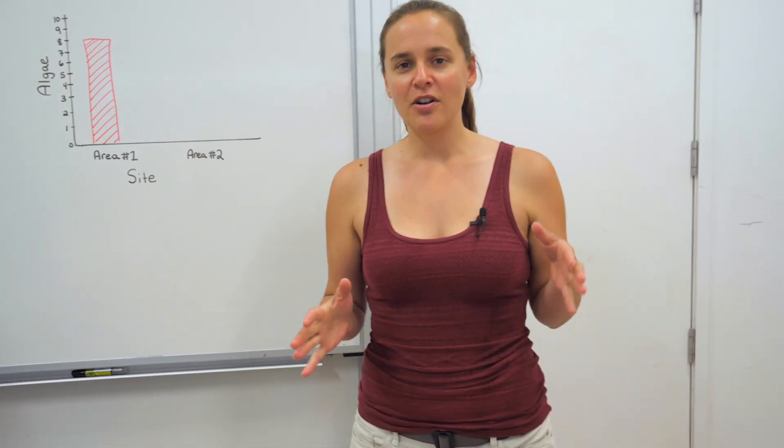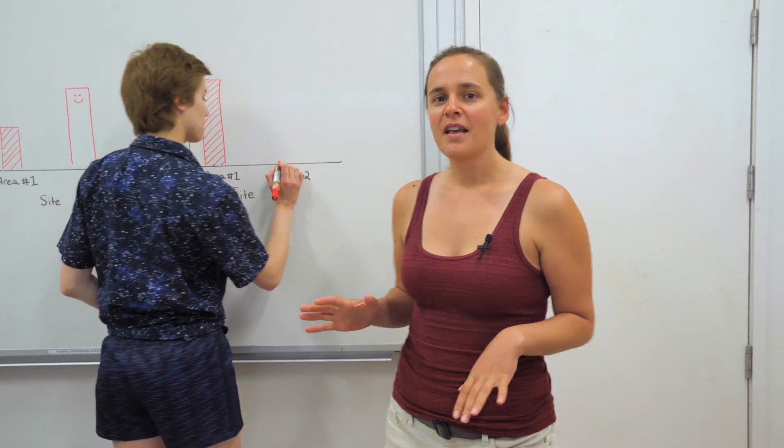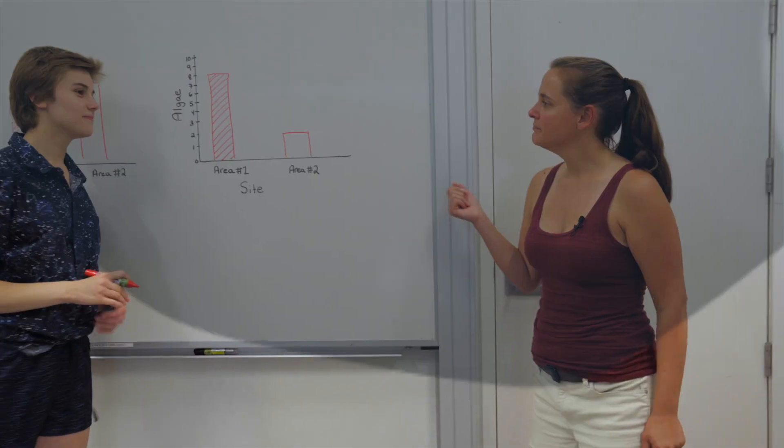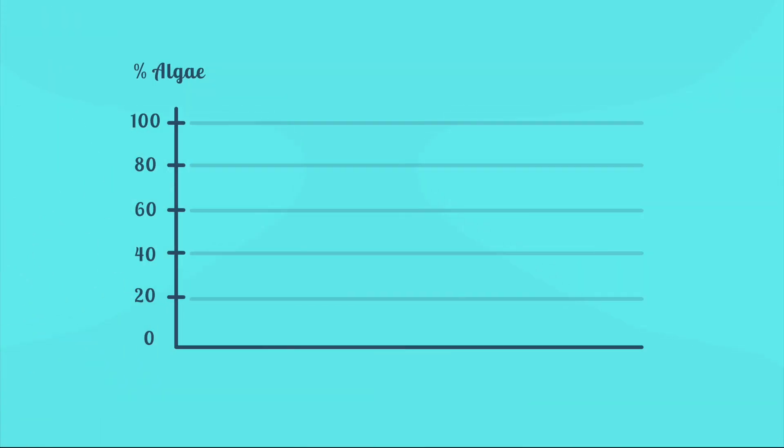So now we'll make bar charts for the other information we collected. That way we can easily compare. Let's take a look at what our team came up with. We can see in area one that a greater percentage of the reef was covered in algae than in area two. Now this suggests that area number one is actually unhealthier than area two.